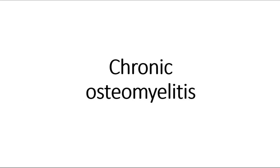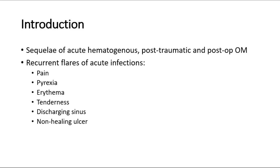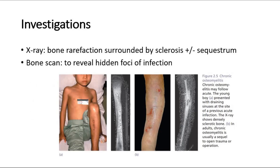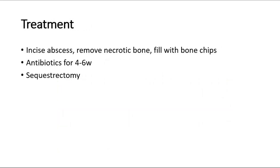Last but not least is chronic osteomyelitis. This is the sequela of acute hematogenous, post-traumatic, and post-operative osteomyelitis, characterized by recurrent flares of acute infection with episodes of pain, pyrexia, erythema, tenderness, discharging sinus, and non-healing ulcer. For investigation, x-ray is expected to show bone rarefaction surrounded by sclerosis, with or without a sequestrum, and bone scan can reveal hidden foci of infection. This picture shows discharging sinuses and the x-ray shows densely sclerotic bone. Treatment includes incising the abscess, removing necrotic bone and filling with bone chips, antibiotics for four to six weeks, and sequestrectomy.